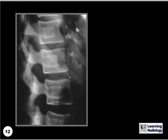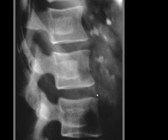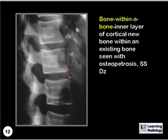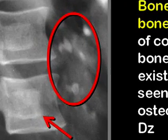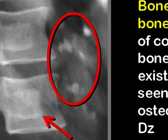What sign is demonstrated here? This is a bone within a bone, which is an inner layer of cortical new bone within an existing bone. It can be seen with osteopetrosis and sickle cell disease. In this case, these are ghost vertebrae, seen with thorotrast injections in childhood. The red circle is demonstrating the dense contrast-filled abdominal lymph nodes, which still contain the thorotrast.